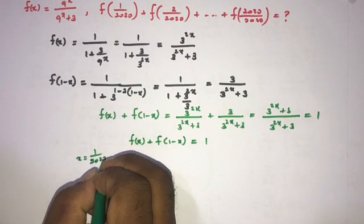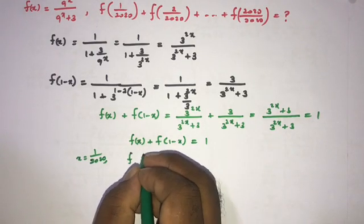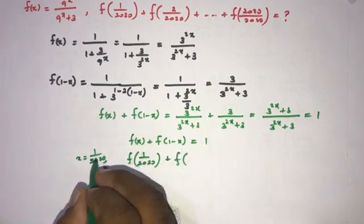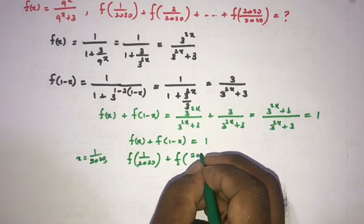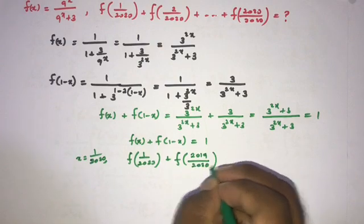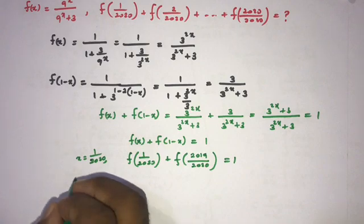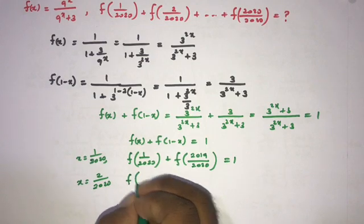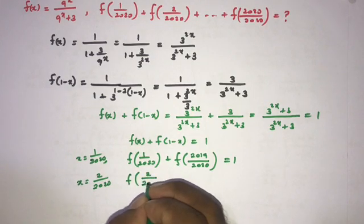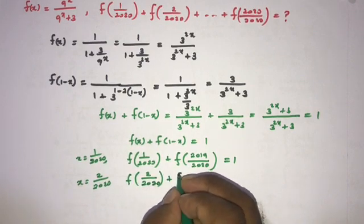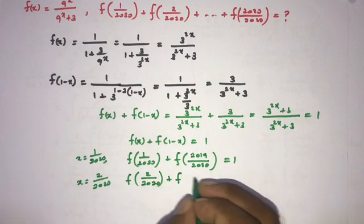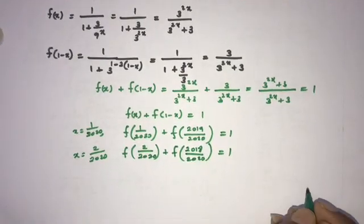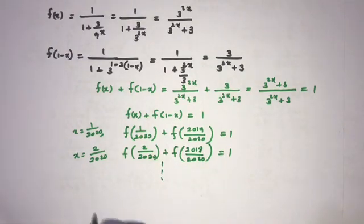Now we can plug in values. Setting x = 1/2020 gives f(1/2020) + f(2019/2020) = 1. Setting x = 2/2020 gives f(2/2020) + f(2018/2020) = 1. Each pair of terms sums to 1.